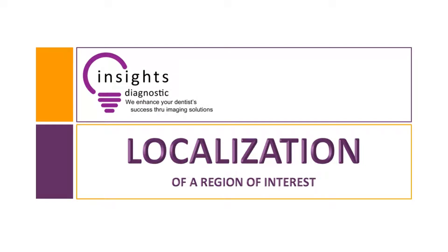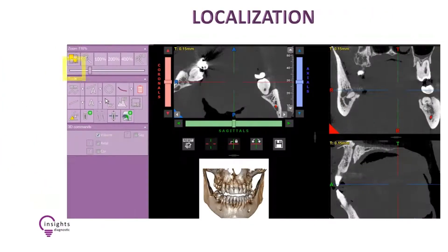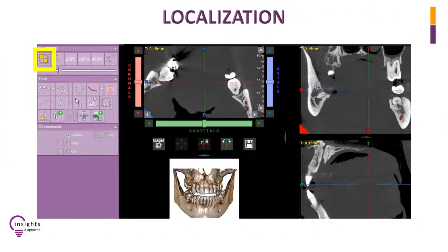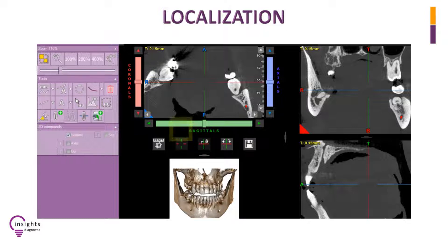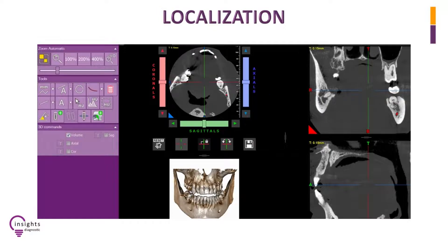Localization of a region of interest. Before anything else, set the size of images per frame so that it will fit to the available screen area. Next, click the highlighted box below the word Sagittals to show axis intersections and be able to focus on the exact region of interest.